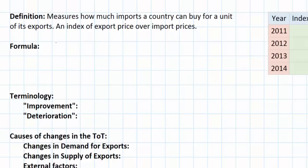We find the price of a basket of a country's exports in one period of time and divide it by the price of the same basket of exports in another period of time, and multiply that by 100. Using this method we come up with an index of export prices. To find a nation's terms of trade we must first know an index of export prices from that nation.